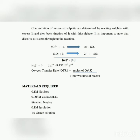Materials required: 0.1 M Na2S2O3 (sodium thiosulfate); 0.003 M copper sulfate (CuSO4·5H2O); standard Na2SO3 (sodium sulfite); 0.1 mL of iodine solution (I2 solution); and 1% starch solution.